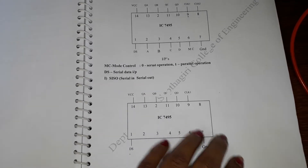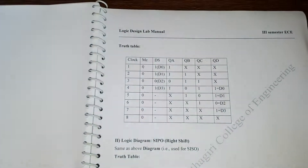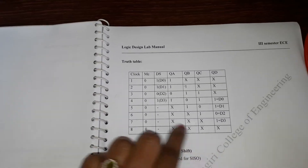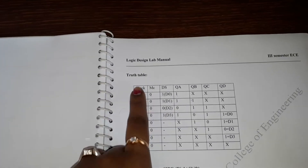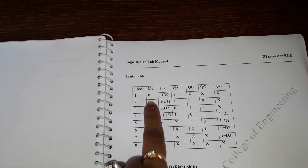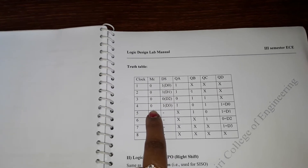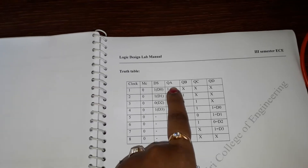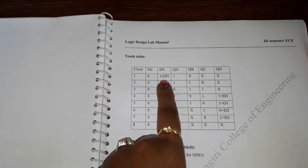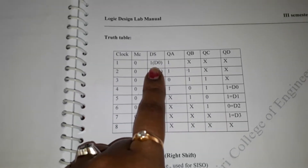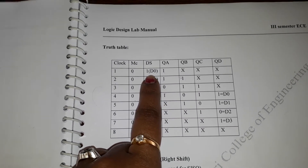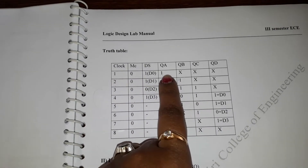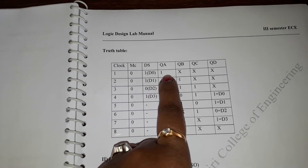This is the truth table for the Serial In Serial Out operation. The clock and mode control — set to 0 for serial operation — are shown. DS is the serial input and QA to QD are the outputs. When we give input 1 and press the clock signal, we get output 1 at QA. QB, QC, QD are not considered at this stage.